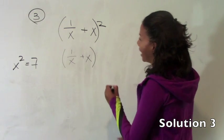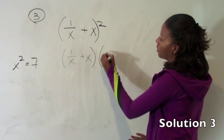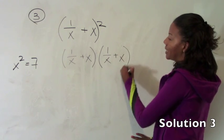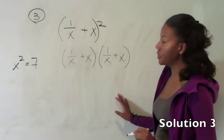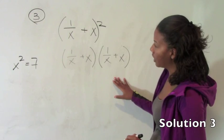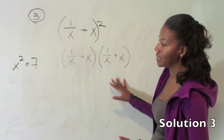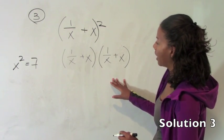This will remind you that you need to foil your answer and you'll actually get three terms instead of two once you simplify.